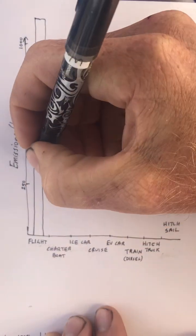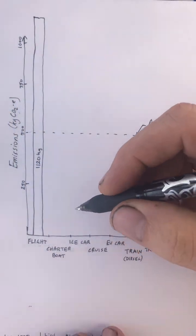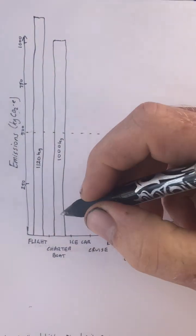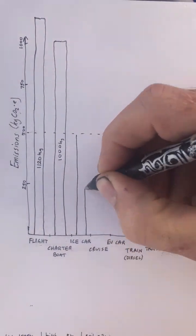A commercial flight in two legs is about 1,100 kilograms. If we chartered a boat and motored most of the way, it'd be about 1,000 kilograms. A typical petrol car, single occupant, 500 kilograms.